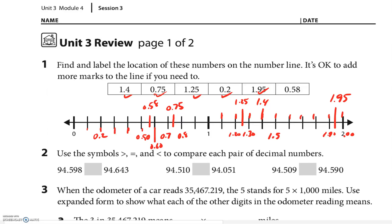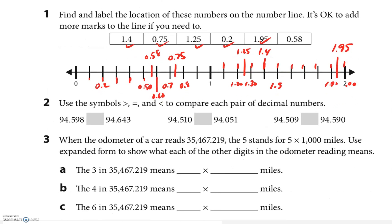Number two, we're gonna compare these numbers. They both have a 9, they both have a 4, this one has a 5, this one has a 6, so the 5 is smaller. 94.598 is smaller than 94.643. Let's look at the next one, same 94s, this one has a 5, this one has a 0, so I think bigger. Same 94s, this one has a 5, this is a 0, this is a 9, so I believe that it's smaller to the left.